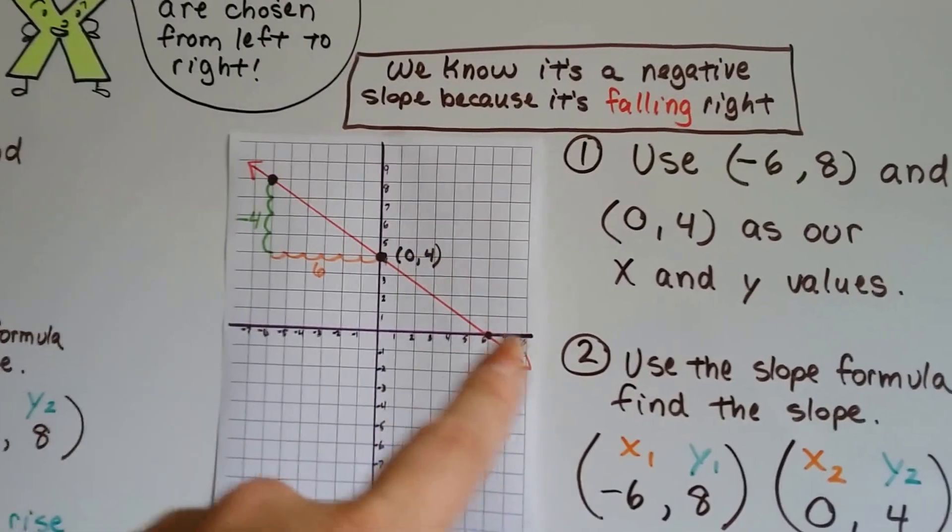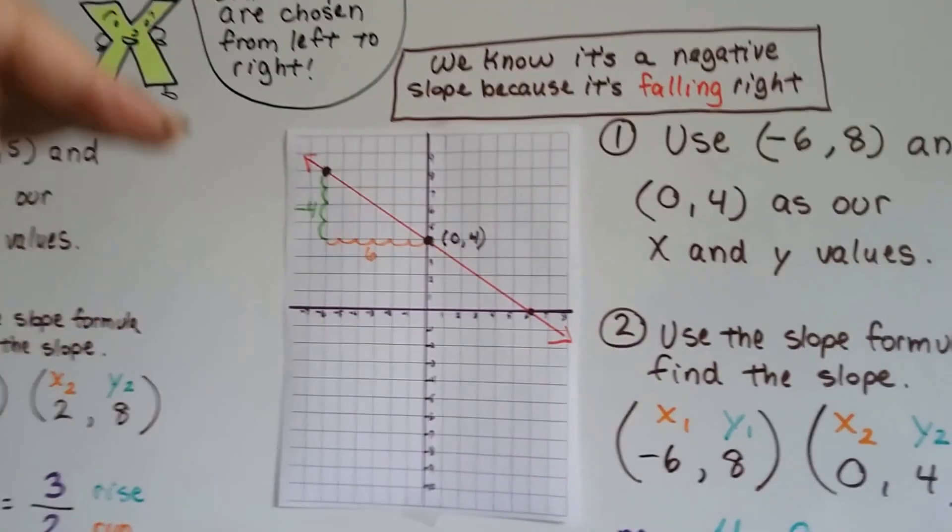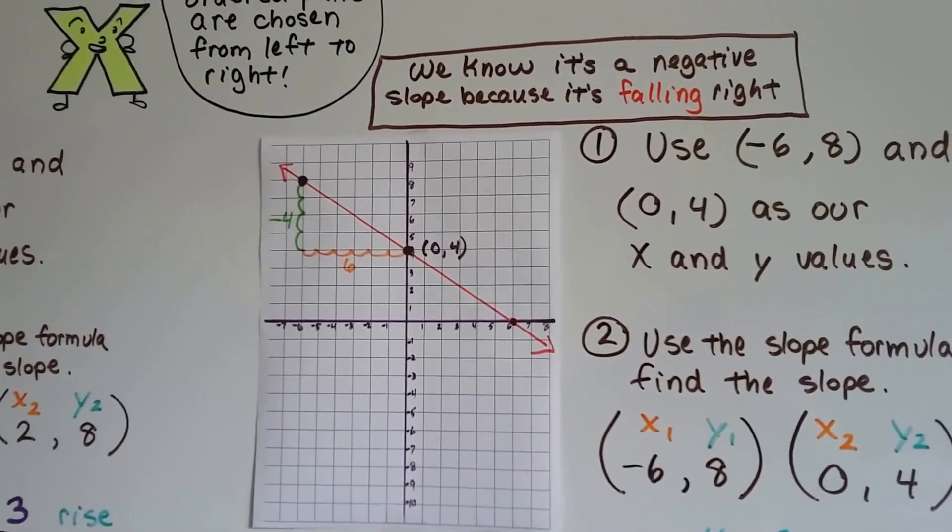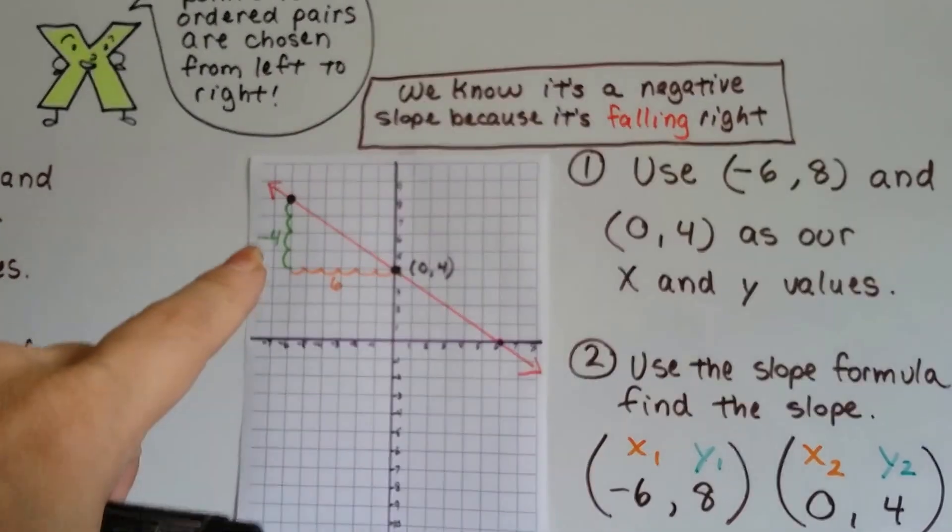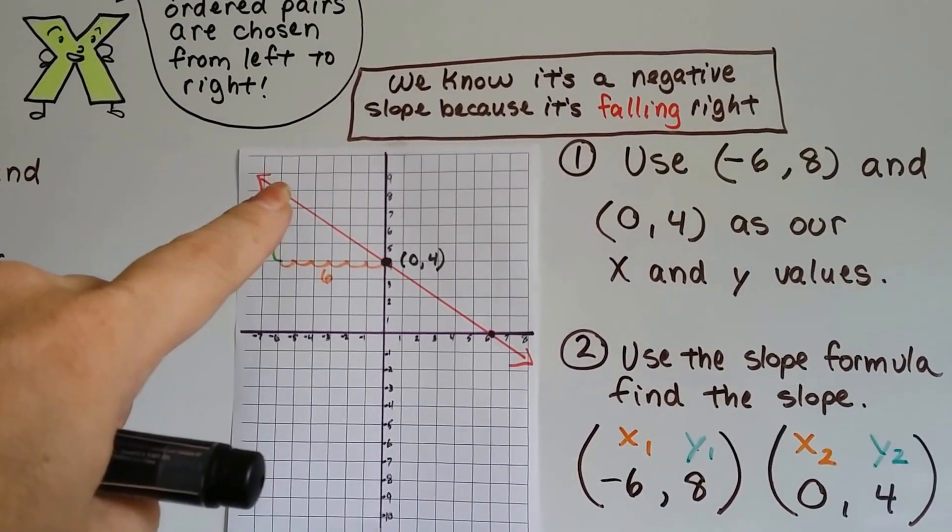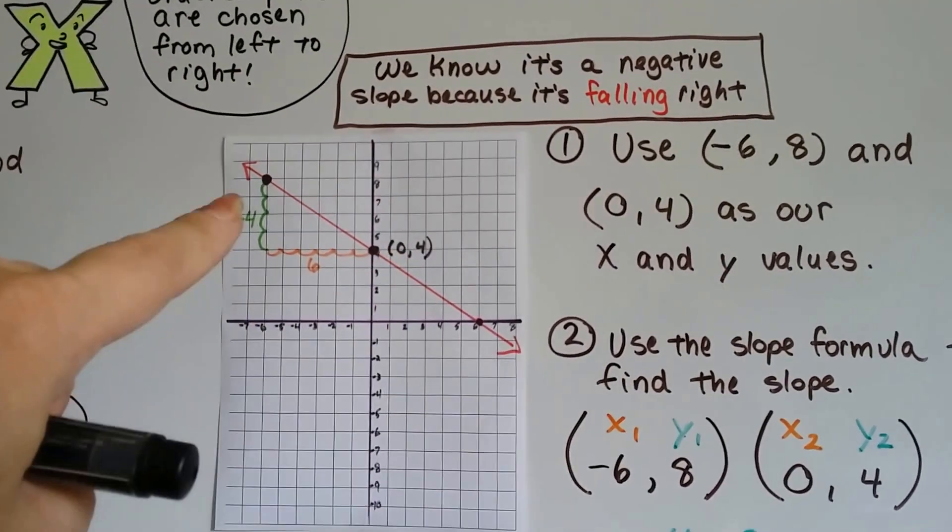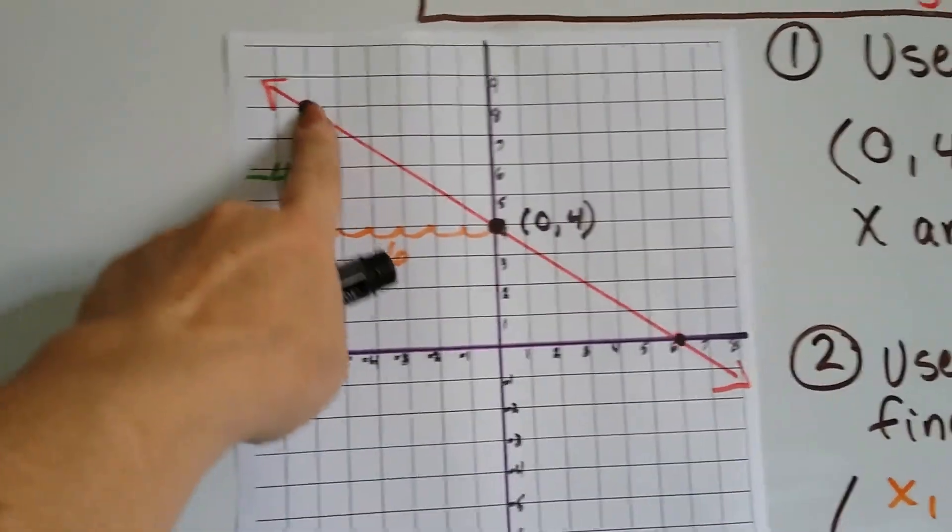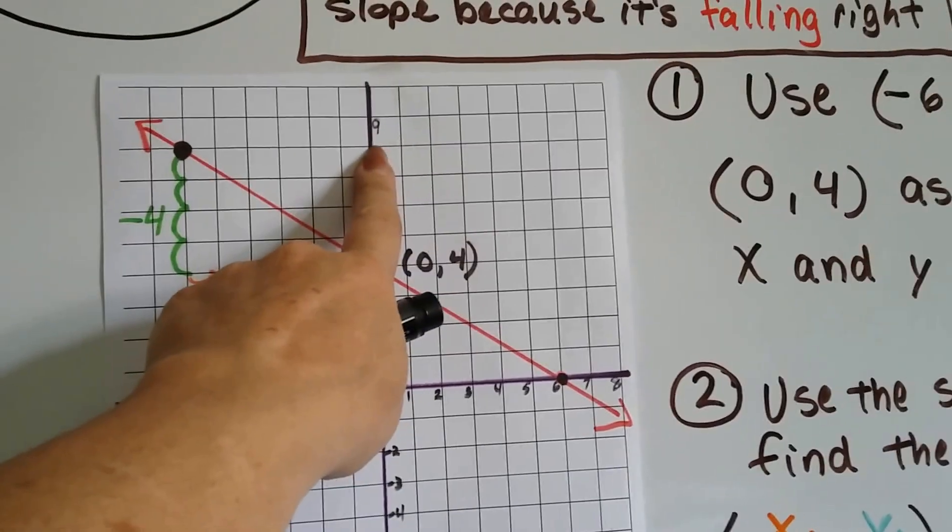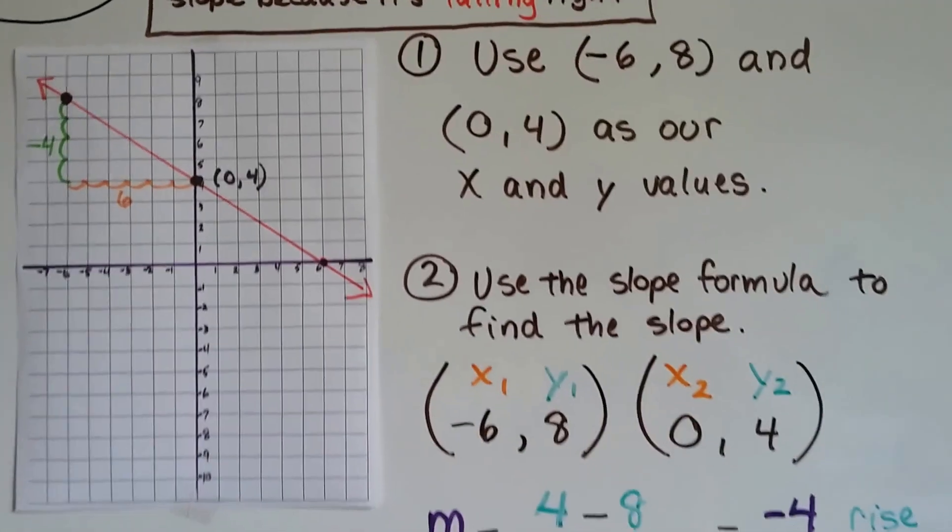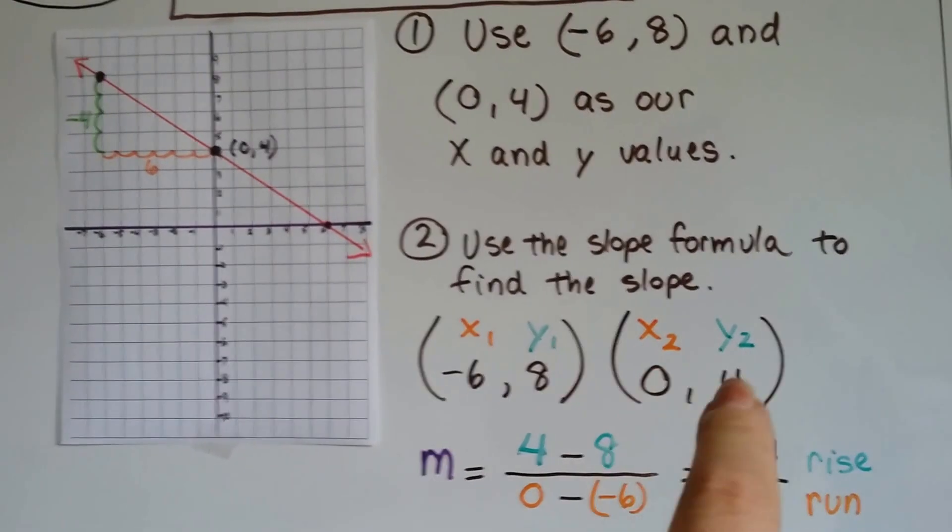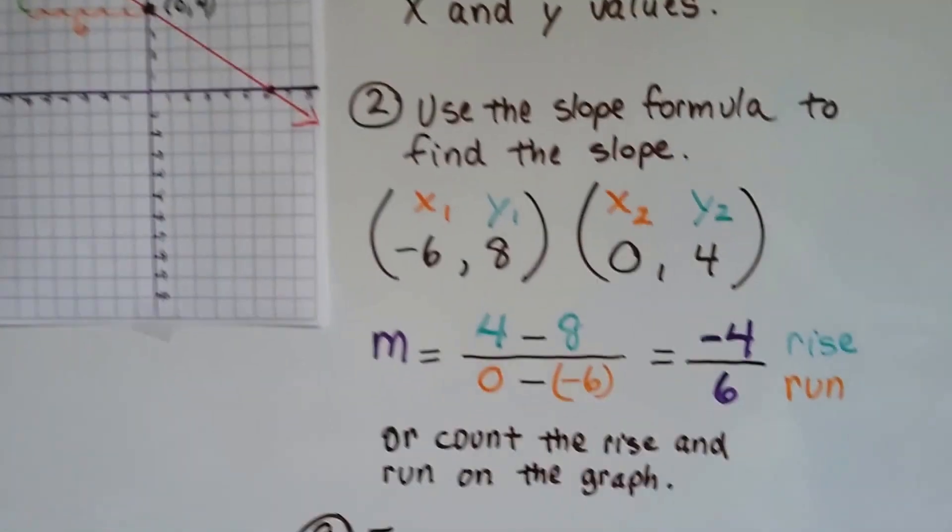Let's try it one more time. So, looking at this line, we can tell that it's falling to the right. So, it's going to be a negative number when we do our slope-intercept form. I'm going to choose our ordered pairs from left to right. So, we choose this one and then this one. So, this ordered pair is going to be negative 6, 8. So, that's x1 and y1. Negative 6, 8. And then 0, 4 is going to be x2, y2.